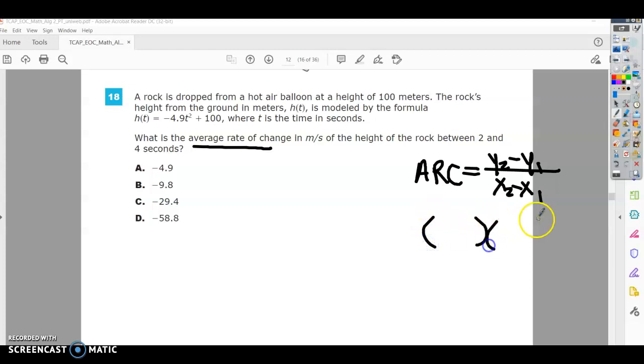So it says that we want to have an average rate of change between 2 and 4 seconds. Since 2 and 4 seconds is our time, that's going to be our x value.